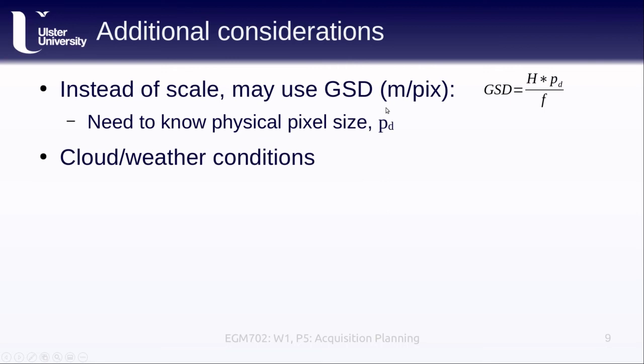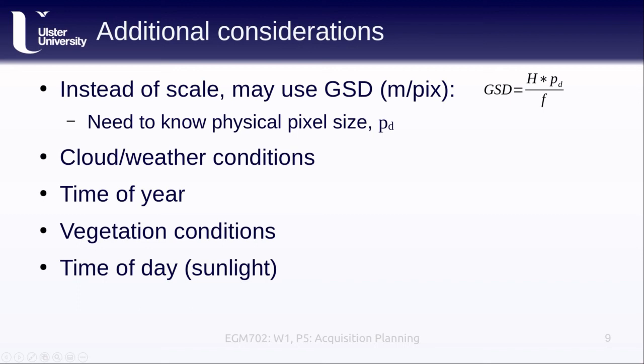We also want to think about the cloud and weather conditions. Depending on what our application is, we might want sunny conditions, cloudy conditions might be okay. You probably don't want to be doing this in a hurricane, so all things to keep in mind as you're planning your acquisitions. The time of year as well, if you're looking at processes that are going to vary over the course of a year, and you're looking at changes from year to year, you might want to make sure that you're coming back at the same time of year. Same thing with vegetation conditions. If you're looking at vegetation, you probably want to come back at the same time each year. If you're looking for just the ground height or the ground location, you might look at flying when you don't have leaves on the trees. All of these are things to think about. And then also you want to think about the time of day that you're flying, because the amount of sunlight might mean that you end up with more glare, which makes it more difficult to use the photos that you acquire.